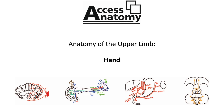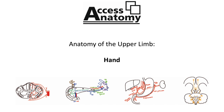Opposition of the thumb is when the thumb is brought across the palm to touch the tip of the fifth finger. Regarding the phalanges, each digit has three phalanges: a proximal phalanx which forms the metacarpophalangeal joints, and the middle and distal phalanx that form the interphalangeal joints. The thumb only has two phalanges and therefore only one interphalangeal joint. Movements at the metacarpophalangeal joints occur in two planes — flexion/extension in the sagittal plane and abduction/adduction in the coronal plane — while interphalangeal joints permit only flexion and extension.